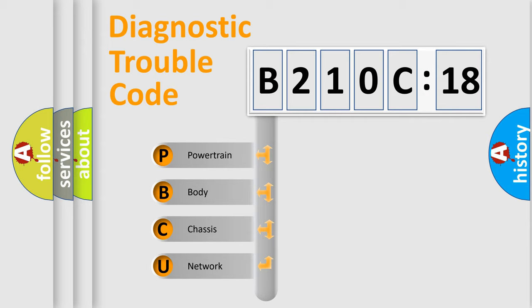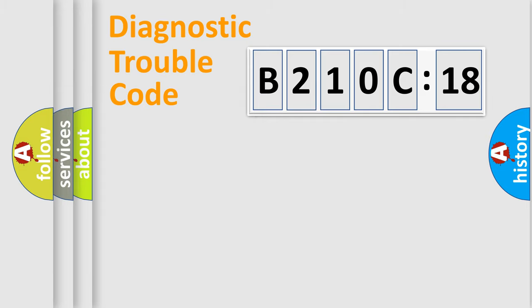We divide the electric system of automobile into four basic units: Powertrain, Body, Chassis, and Network.